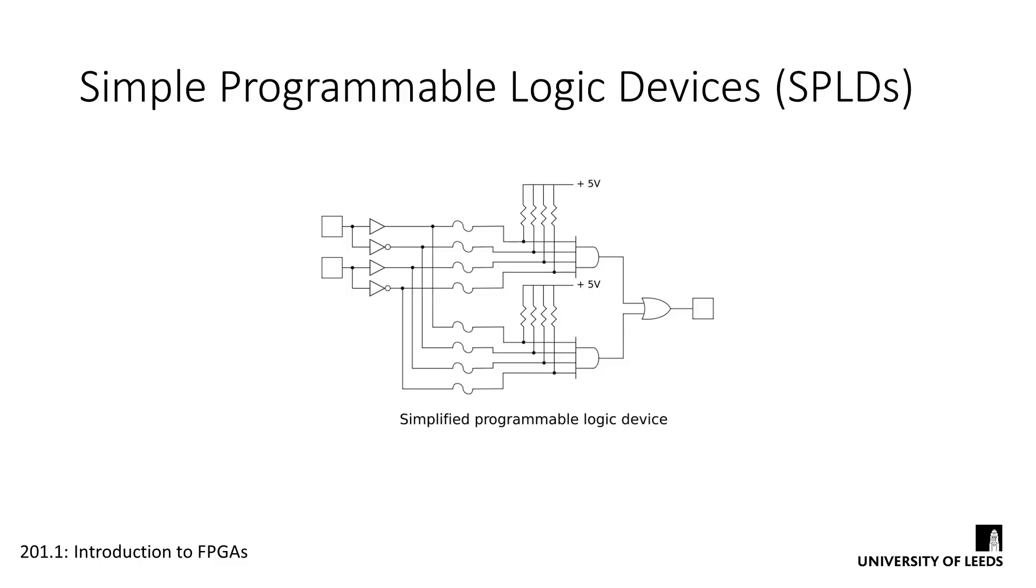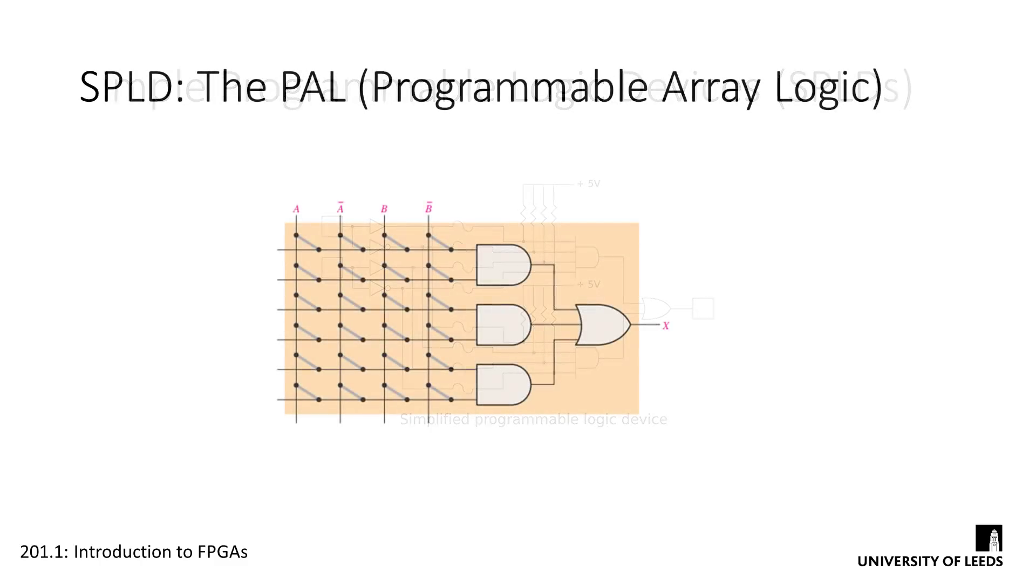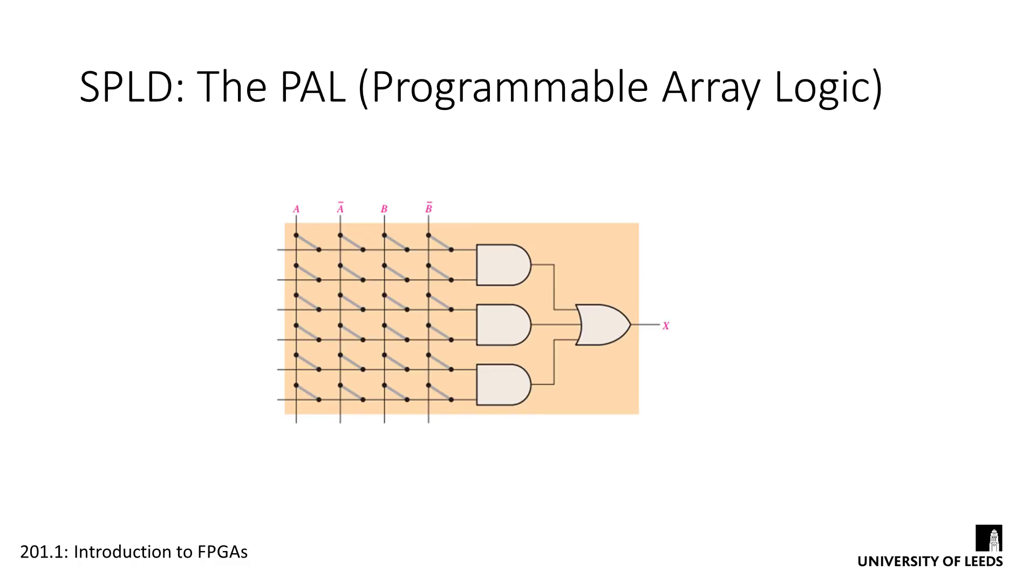There are two major types of SPLD: programmable array logic or generic array logic. The PAL is an SPLD at its most basic. It contains a programmable array of AND gates that can connect to a fixed array of OR gates. The columns of the array are connected to our inputs and their complements, which can in turn be connected to the AND gates through programmable links called cells. This allows any sum of products expression with a defined number of variables to be implemented.